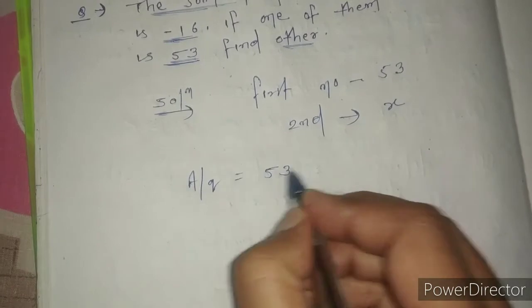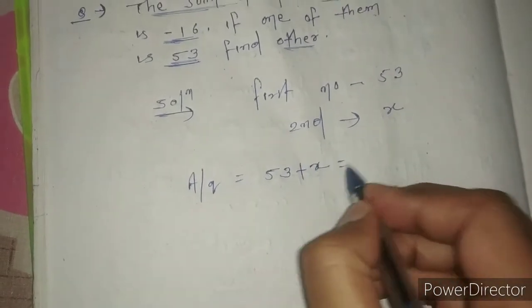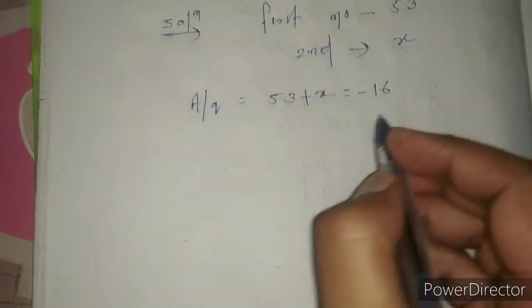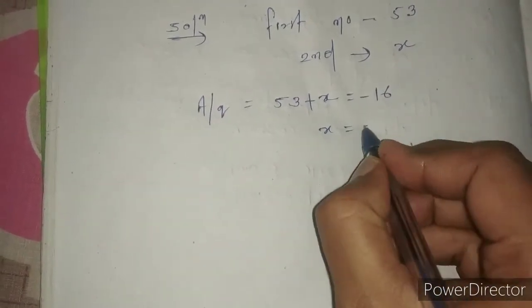If we add this number, we get minus 16, right? So what would be the value of x? It would be minus 16 minus 53, which equals minus 69.